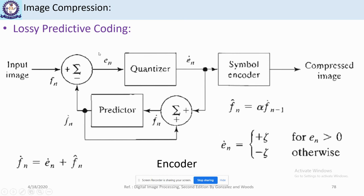The first lossy compression technique we will discuss is lossy predictive coding. In this, we use a predictor that predicts the current intensity value based on previous predictions and error. This predicted value is subtracted from the original pixel value to get the error e(n). This error is then passed through a quantizer, which maps it to another range and reduces psycho-visual redundancy.